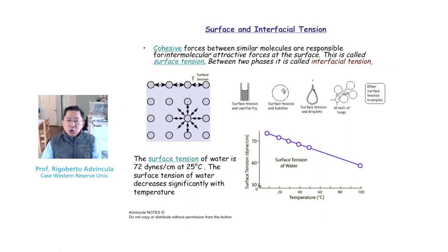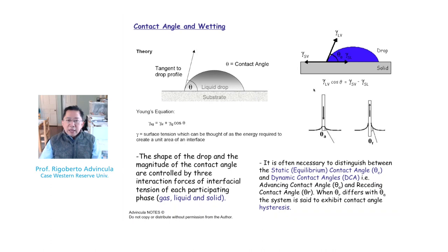We can measure surface tension with techniques like the sessile drop method, the Wilhelmy plate method, and other contact angle measurement devices. Measuring the contact angle between surfaces allows us to look at the surface tension between solid-liquid, solid-air, and liquid-air interfaces, given by Young's equation.